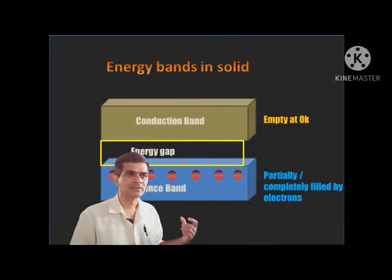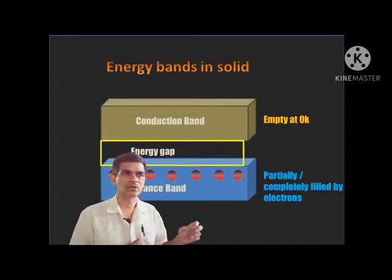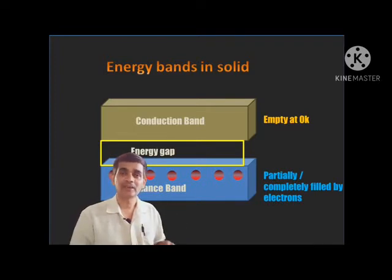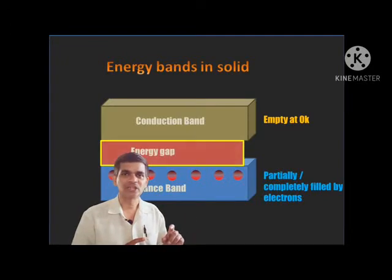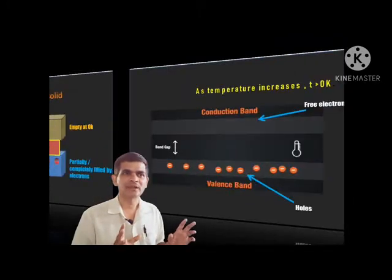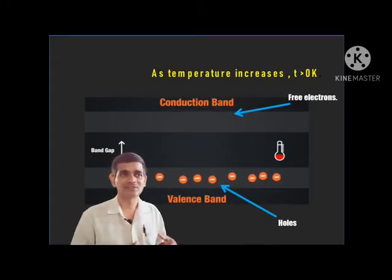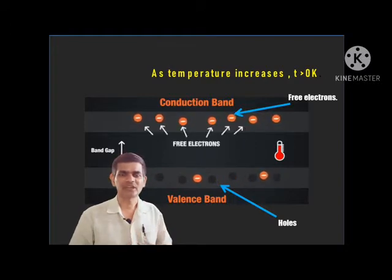You can see in the picture: the valence band is partially or completely filled by electrons, and above it is the conduction band, which is empty at 0 Kelvin. The gap between the valence band and conduction band is called the energy gap or forbidden energy gap. Based on this energy gap, we can easily explain the classification of solids as metals, insulators, and semiconductors.